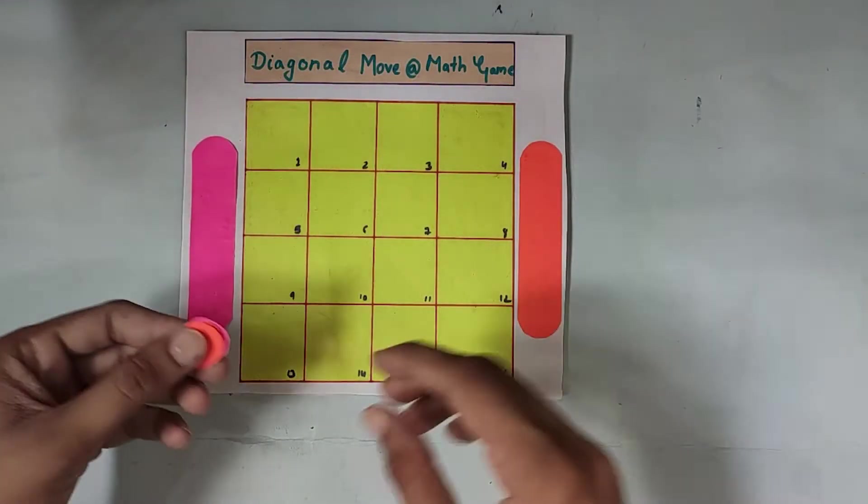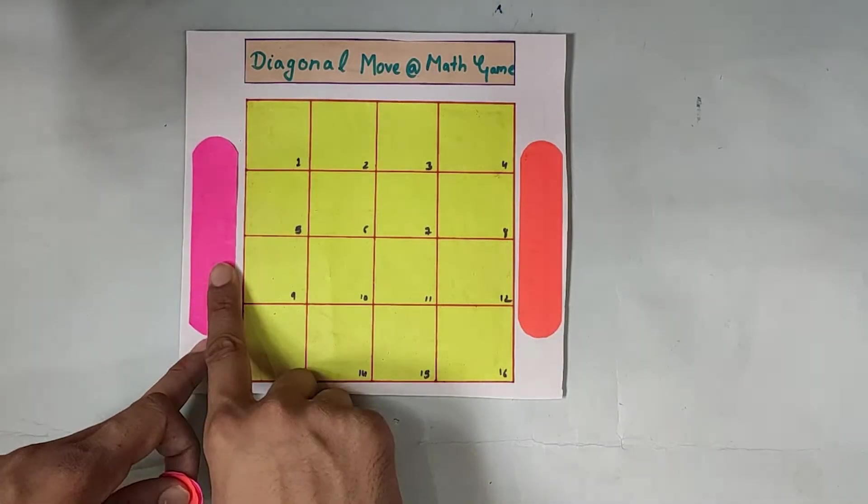To play this game, you need four orange circles and four pink circles.